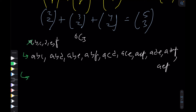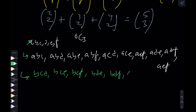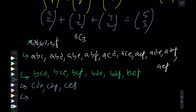Since the rest of the combinations won't contain a, I cut it out and move on to the next element, b. The combinations containing b but not a are: BCD, BCE, BCF, BDE, BDF, BEF. Then moving on to c — not containing a or b — we get: CDE, CDF, CEF. And finally DEF.